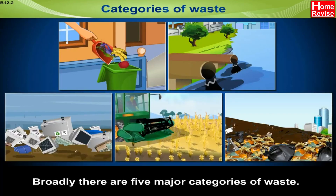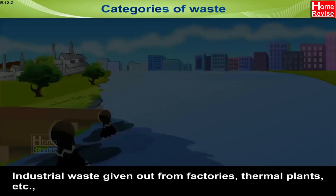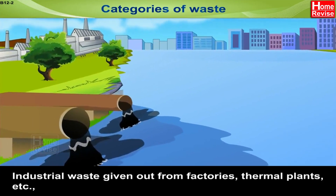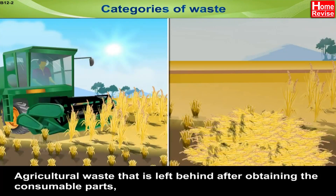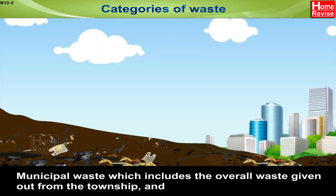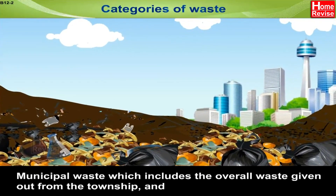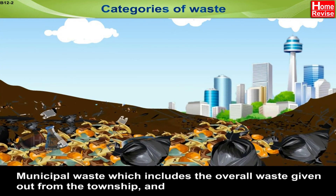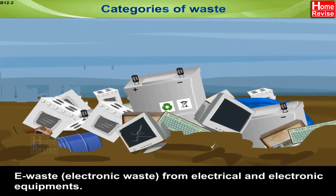Categories of Waste. Broadly, there are 5 major categories of waste: Domestic waste given up from homes; Industrial waste given up from factories, thermal plants, etc.; Agricultural waste left behind after obtaining the consumable parts; Municipal waste which includes the overall waste given up from the township; and E-waste, which is electronic waste from electrical and electronic equipment.